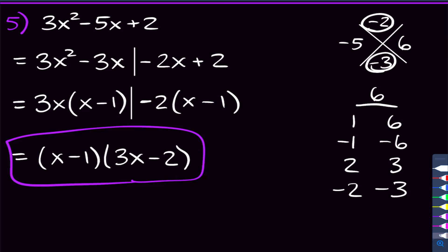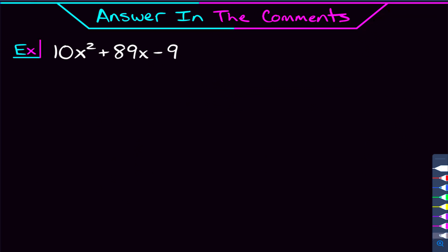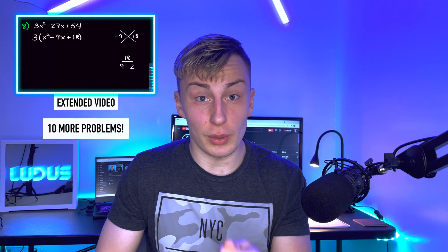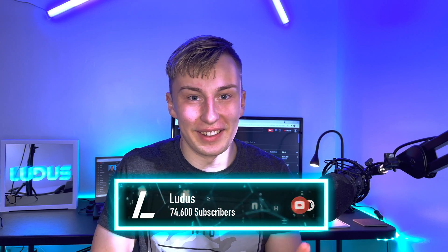That is factoring trinomials in a nutshell. If you're feeling comfortable, here's a problem to try in the comments: 10x squared plus 89x minus 9. Let me know your answer, and if you have any questions let me know in the comments. I also have an extra video in the description where we factor 10 more quadratics — binomials, trinomials, and factoring by grouping. Make sure you're subscribed; we're getting closer and closer to 100k. I'll see you guys soon.